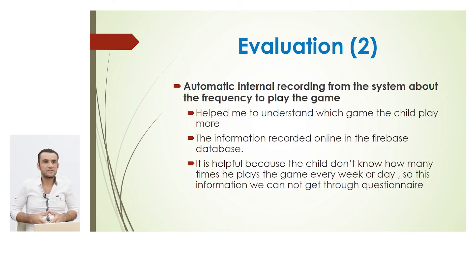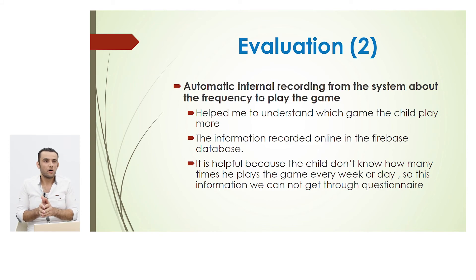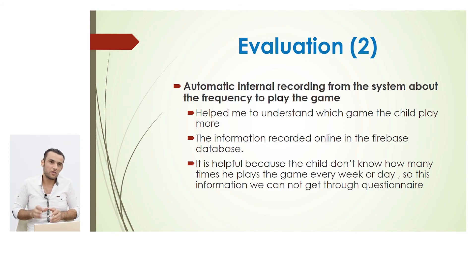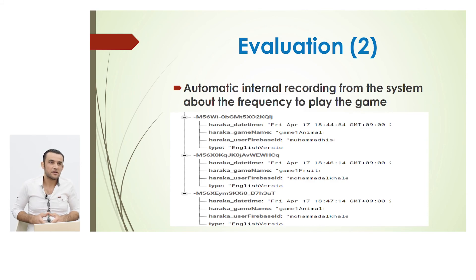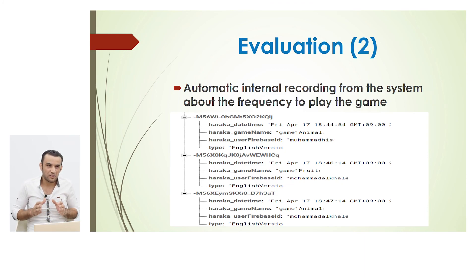The second evaluation method is automatic recording from the system, because neither the child nor the parents can accurately report how many minutes were spent per day. Every time the child enters a game, which game they enter, all this information is recorded by the system, helping me analyze which game was more engaging. For example, a record shows a user with ID Muhammad HIS played Game 1, Animals, in the English version — there's also an Arabic and Japanese version. This helped me understand what attracts children and what doesn't.